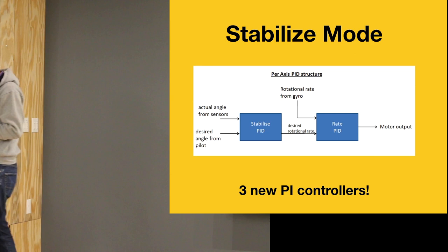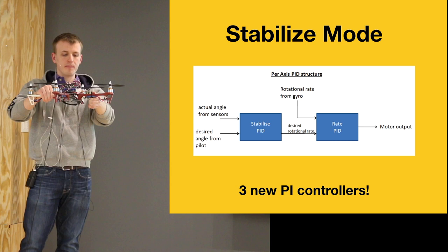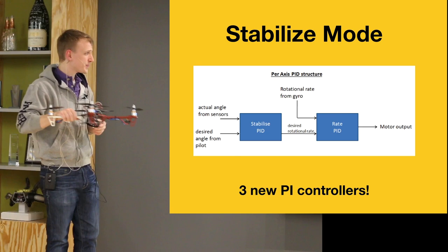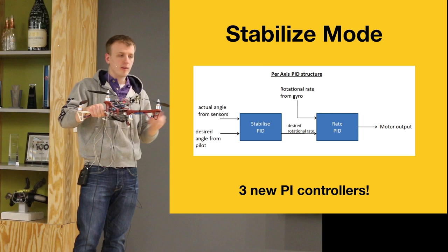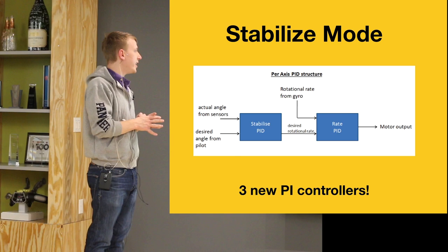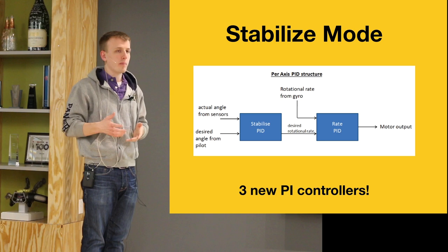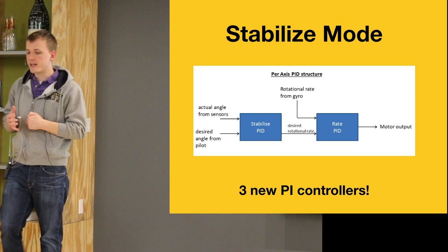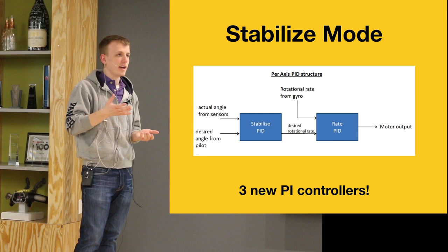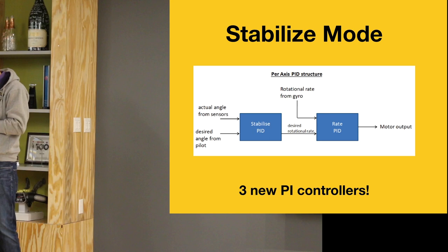There's another mode I don't have time to cover tonight: stabilized mode. In this mode, the quadcopter is always trying to maintain stable flight at an angle of zero degrees in each axis. To build that functionality, you build on top of the rate controller. The stabilized controller has a new set of PI controllers for stabilization. They take the actual angles and the desired angle from the pilot and feed into the rate controller. So the stabilized controller says: my angle is negative five degrees, and it tells the rate controller to start rotating to compensate for this angle error. Basically we have three new PI controllers there.